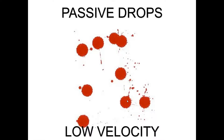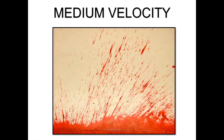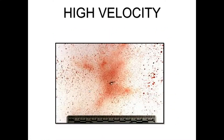Medium velocity spatter travels a little faster than low velocity when it hits a surface, so you can see it is a little more elongated and coming in at an angle. High velocity spatter is typically more of a spray — tiny droplets less than a millimeter in diameter. This just means a lot of energy was behind that blood when it hit the surface.